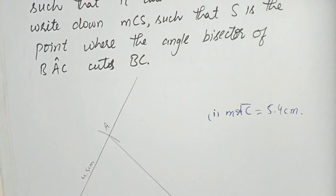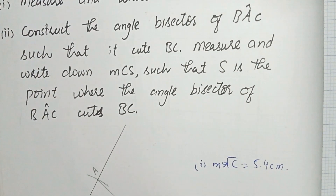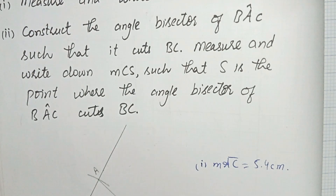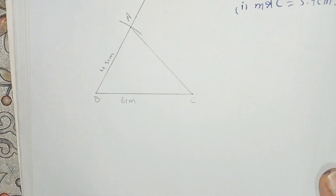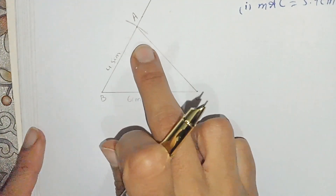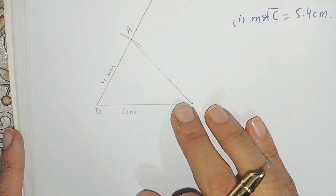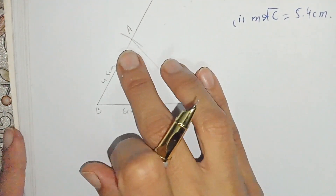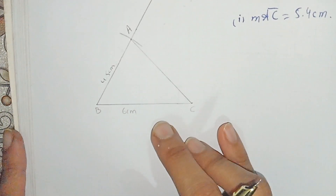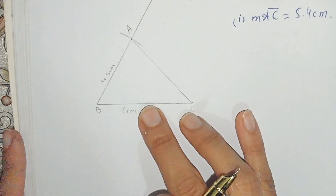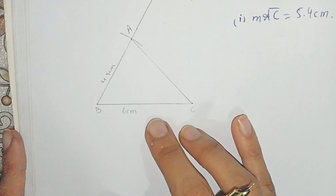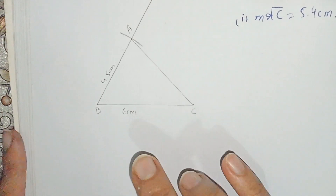Part number two: construct the angle bisector of angle BAC such that it cuts BC. We have to draw the angle bisector of angle BAC — this angle here. We draw the bisector and it cuts line BC at point S. Then we measure the length of CS.